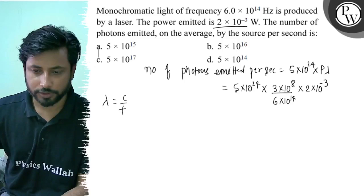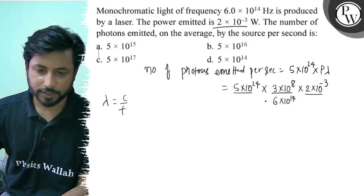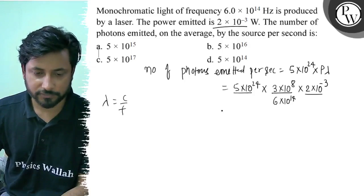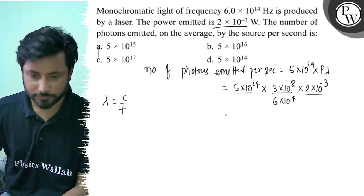This becomes 5 × 10^23 for our power term, and this completes lambda. Okay, so we will solve it and we will get 5 × 10^15.